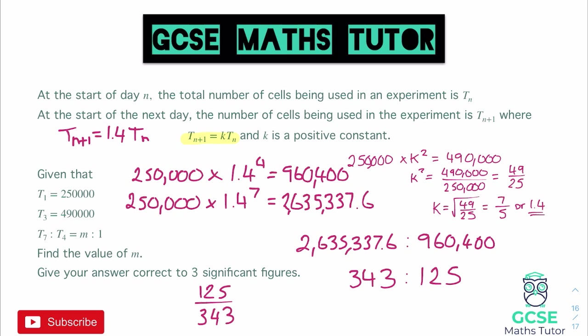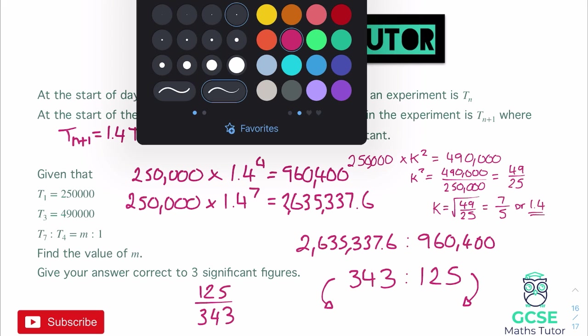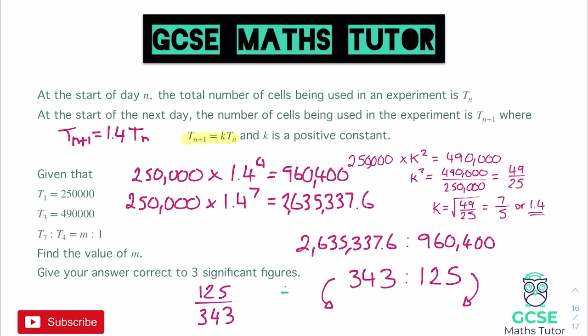Now we have our ratio but it's not written in the form m to 1. So if I want it in the form m to 1, then I need to divide both sides by 125 because that's what's going to give us a 1 on the right hand side of the ratio. So if I divide both sides by 125, 343 divided by 125 becomes 2.744, so 2.744 to 1.